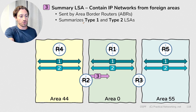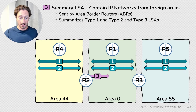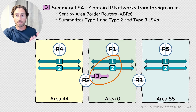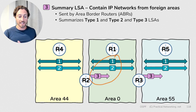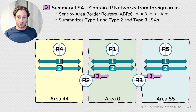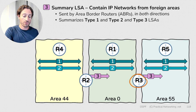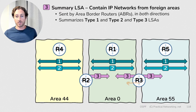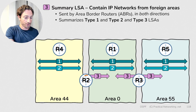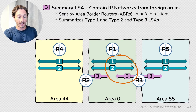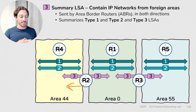Type 3 LSAs don't just summarize Type 1 and Type 2 LSAs — they also summarize other Type 3 LSAs. For example, Router 3 is going to share the information learned from the Type 1, Type 2, and Type 3 LSAs that exist in Area 0, and send that into Area 55. This Type 3 summarization also happens in both directions. Router 3 will take the information from the Type 1 and 2 LSAs in Area 55 and summarize them as Type 3 LSAs into Area 0. Similarly, Router 2 will take the Type 1, Type 2, and Type 3 LSAs from Area 0 and summarize those into Area 44 as Type 3 LSAs.